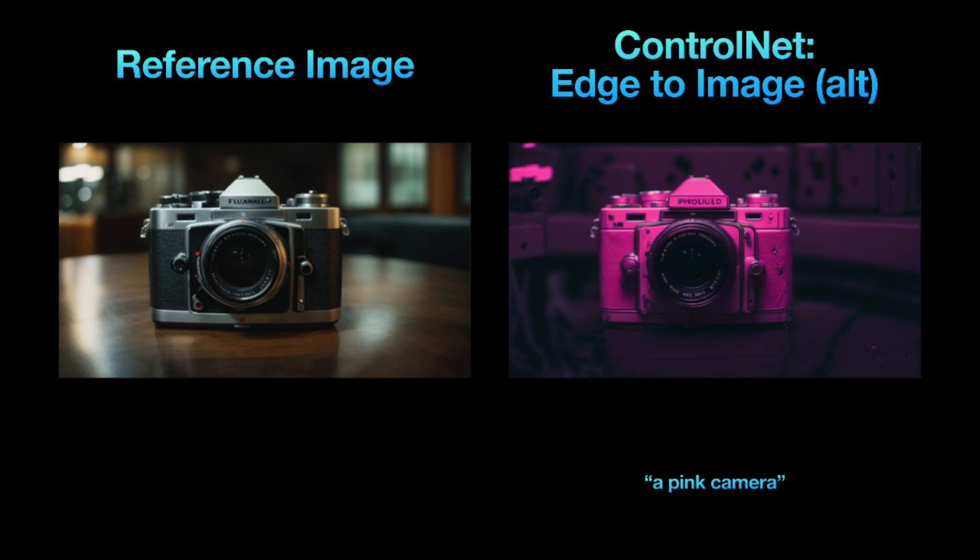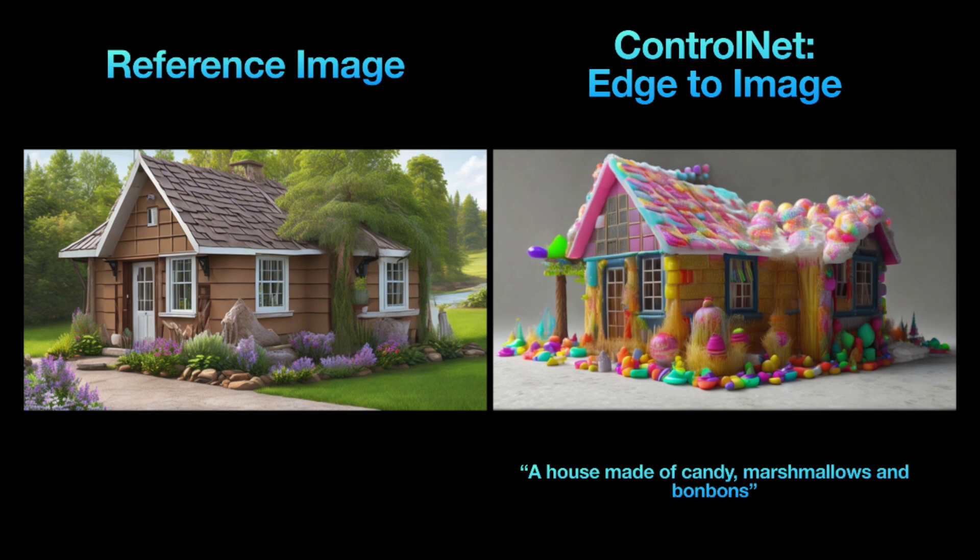There's another choice for Generation 2 models called Edge to Image Alt, which works like the regular option. It creates an outline of a reference image using all its edges for the generated image. However, it gives smoother edges and better results. Take a look at what this alternative feature did for my camera using the prompt 'a pink camera.' In another example, I made a house made of candy.